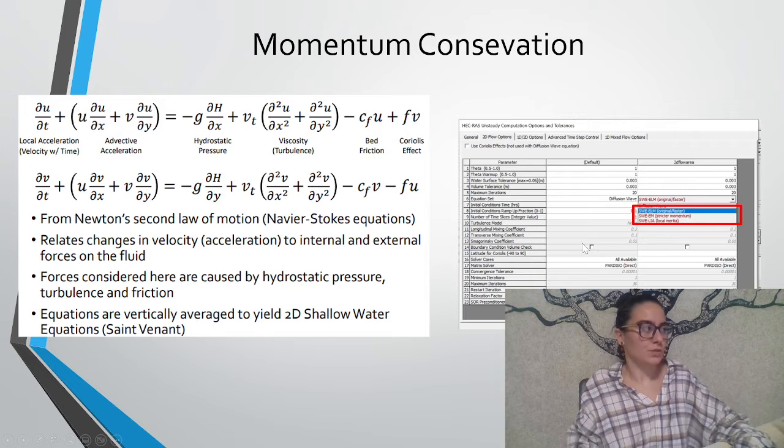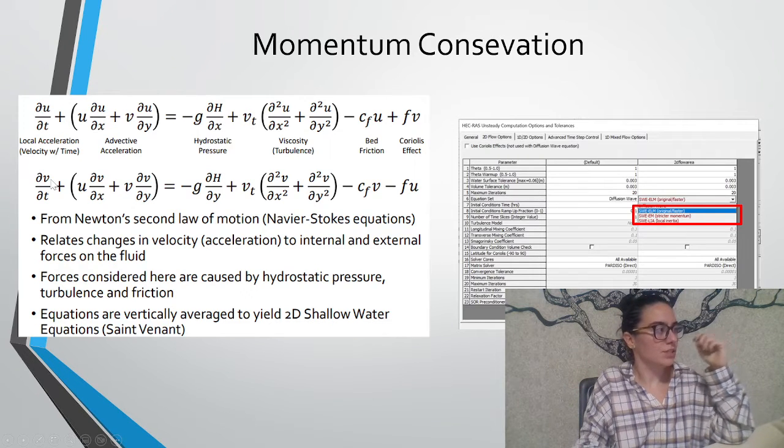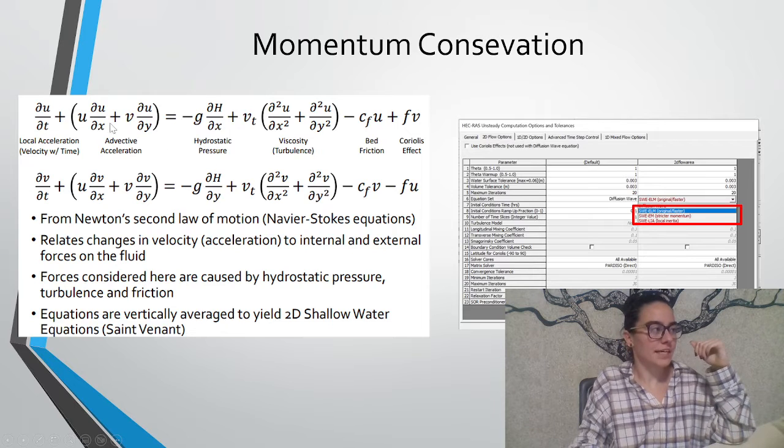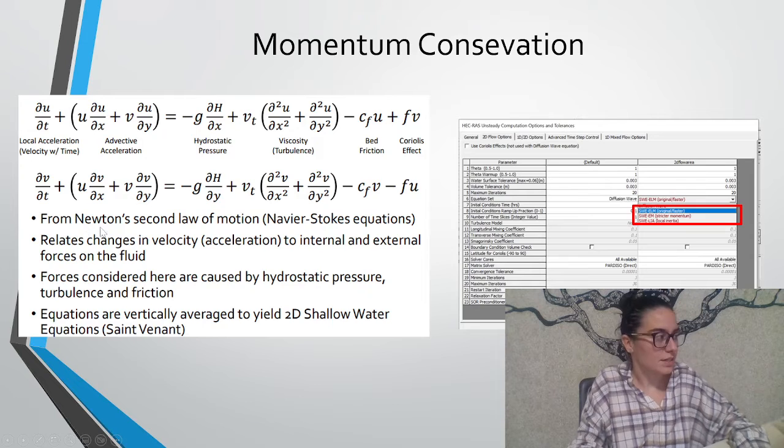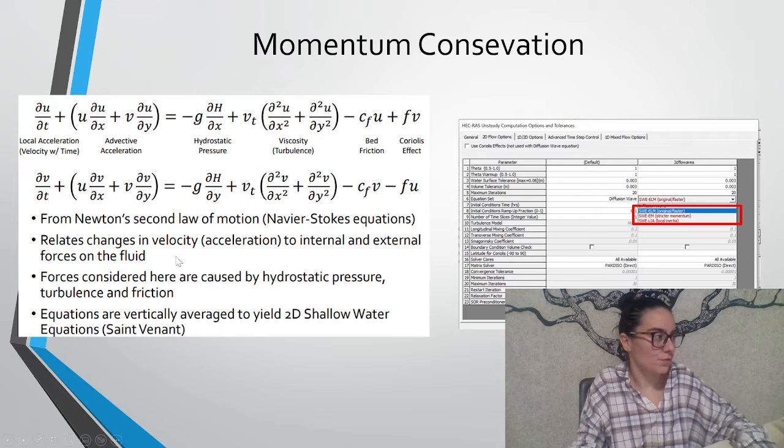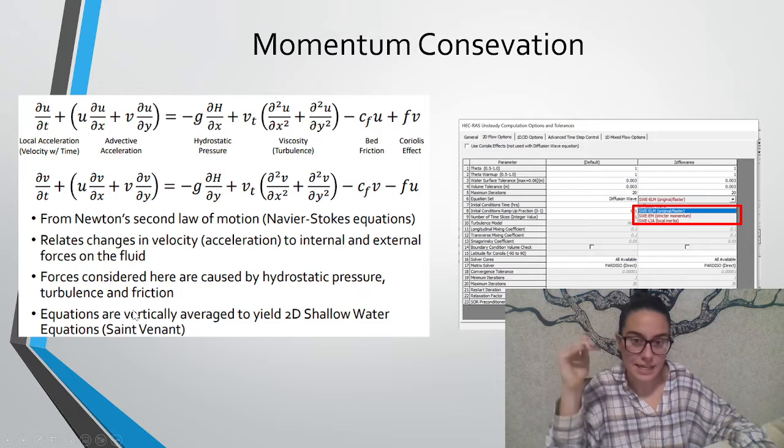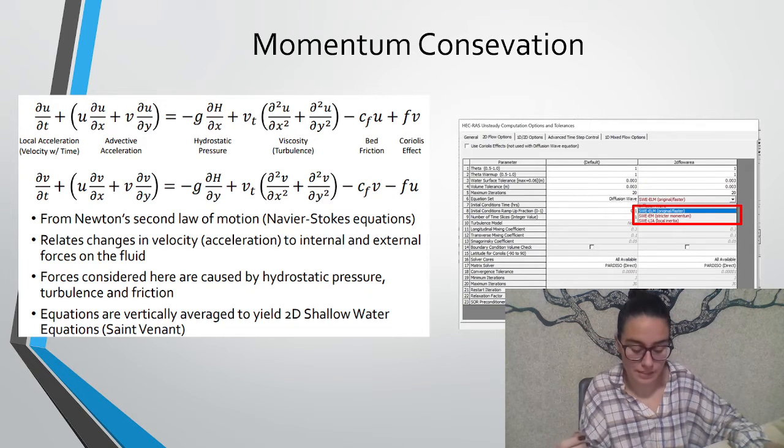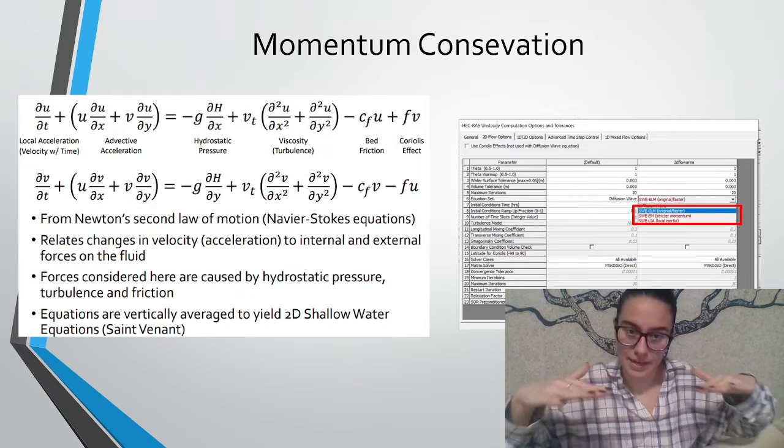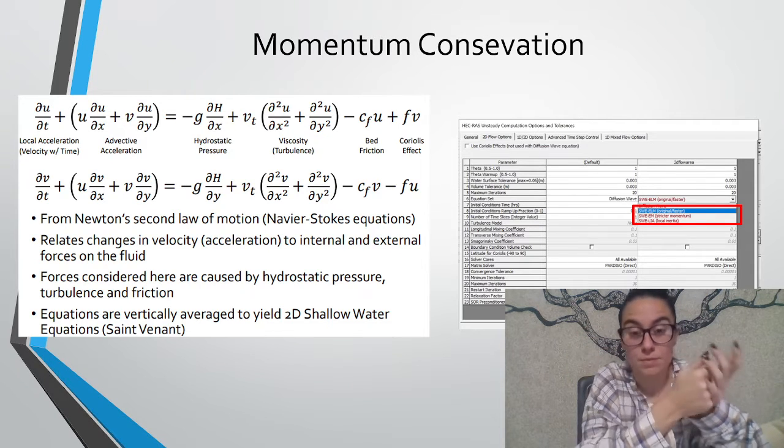What is momentum conservation? We have the mass conservation and now the momentum conservation. Those are the equations for the momentum conservation and they seem very complicated but are actually quite simple. They come from Newton's second law of motion or Navier-Stokes equations, relating changes in velocity, u and v, acceleration to internal and external forces of the fluid. We have the hydrostatic pressure, the viscosity, the friction, the Coriolis effect. These equations are vertically averaged to yield the shallow water equations. Why? Because we think water is mostly moving in this plane that we can depreciate what is happening in the z-axis so everything becomes more simple.